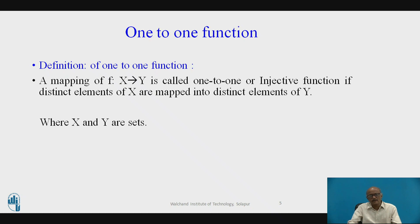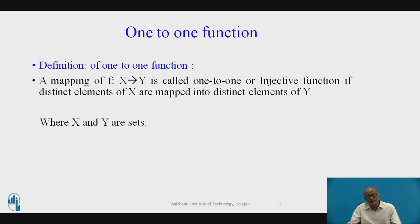Now let us review what is a one-to-one function. A mapping from set X to set Y, denoted f, is called one-to-one or injective if distinct elements of set X are mapped to distinct elements of set Y.